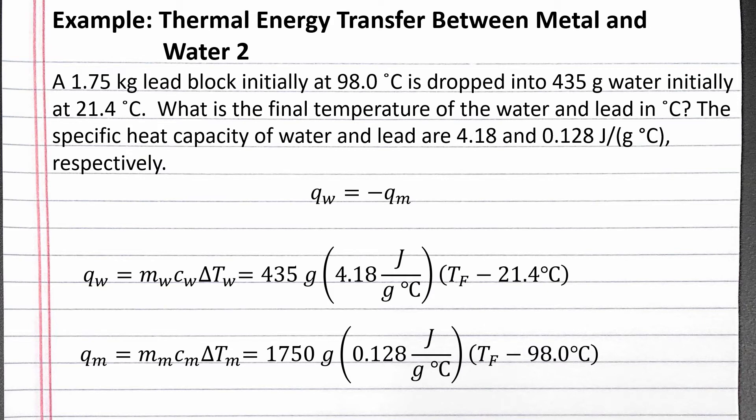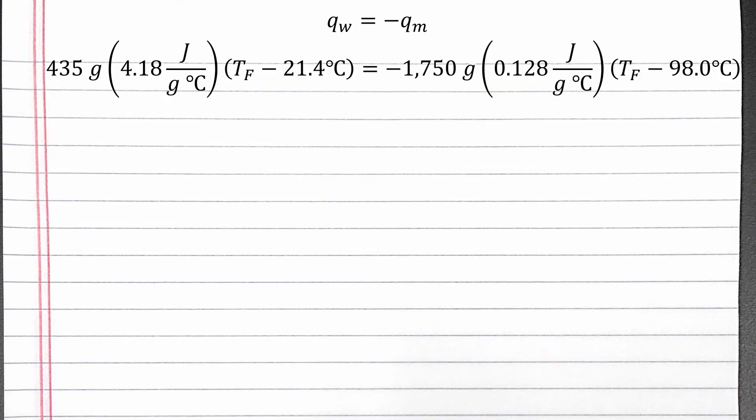Next, we'll need to plug these expressions for q water and q metal into q water equals negative q metal, and then we'll solve for T final. In order to solve for the final temperature, we can first use the distributive property on each side.